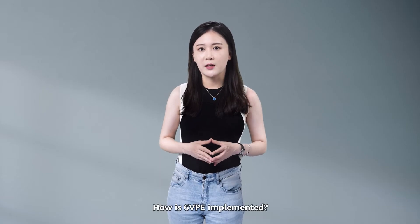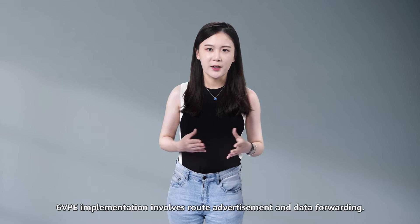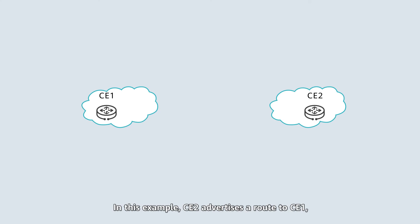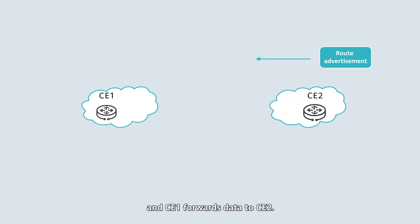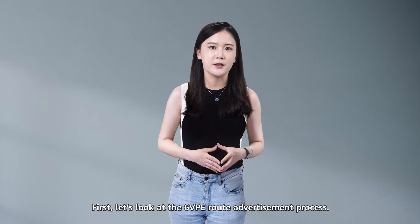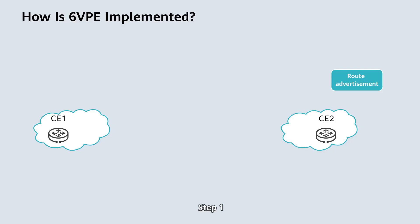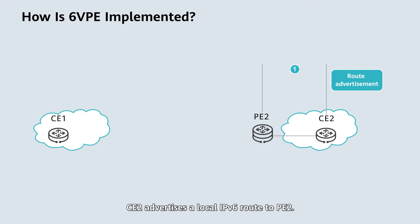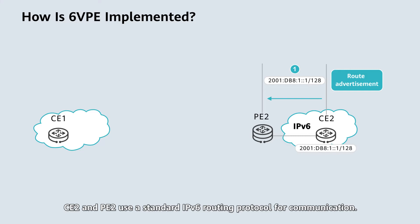How is 6VPE implemented? 6VPE implementation involves route advertisement and data forwarding. In this example, CE2 advertises a route to CE1 and CE1 forwards data to CE2. First, let's look at the 6VPE route advertisement process. Step 1: after a neighbor or peer relationship is established between CE2 and PE2, CE2 advertises a local IPv6 route to PE2. CE2 and PE2 use a standard IPv6 routing protocol for communication.